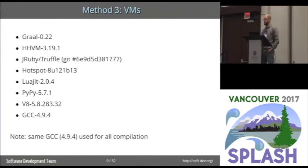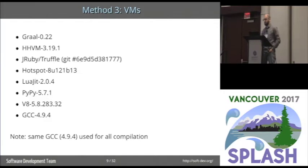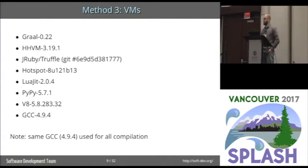Next up, which VMs? These are all current VMs at the time of writing, apart from GCC. We have Graal, HHVM, JRuby, TruffleRuby, Hotspot, LuaJIT, PyPy, and V8. GCC is the elephant in the room — it acts as a baseline because it doesn't contain a just-in-time compiler. Also, that version of GCC is used to compile all of the above VMs, thus eliminating GCC version as a confounding variable.